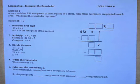For example 1, it says a state park has 257 evergreens to plant equally in 9 areas. How many evergreens are planted in each area? What does the remainder represent? So to solve this problem, we need to divide 257 by 9.